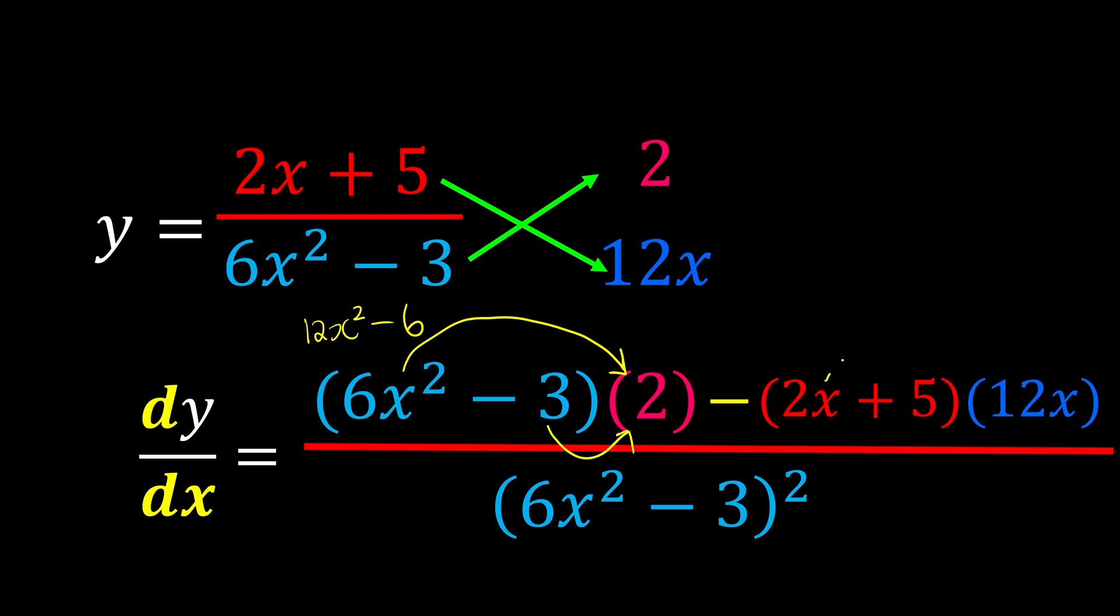Meanwhile, 2x times 12x, we have 24x squared. 5 times 12x is going to be 60x. Put inside the bracket and it will look like this.